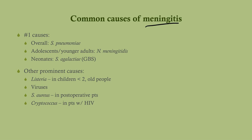In adolescents and younger adults, the big cause is Neisseria meningitidis, which has a unique presentation. In neonates, it's Group B Strep, Strep agalactiae. In children under age two and older people over 55 to 60, we need to consider Listeria. Staph aureus is a concern in post-operative patients if aseptic technique was inadequate, and Cryptococcus can show up in HIV patients — it does not occur in the general population.